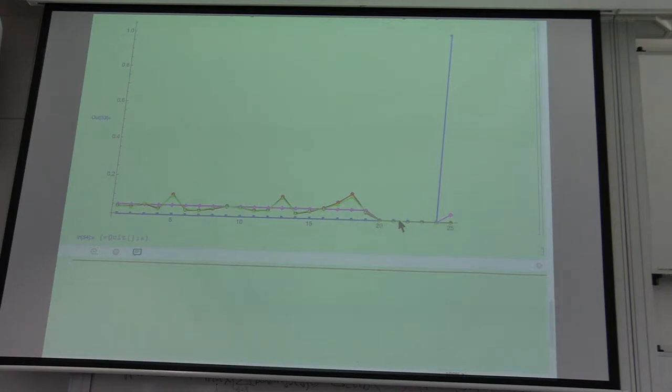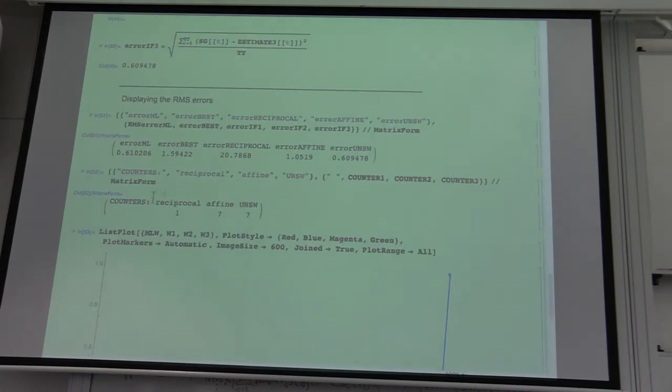It gives zero to all attackers, and then it still manages to find maximum likelihood weights and produces almost optimal maximum likelihood reading, despite massive collusion attack.